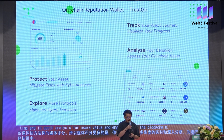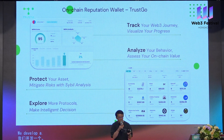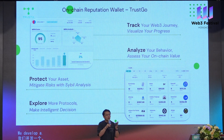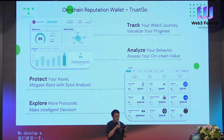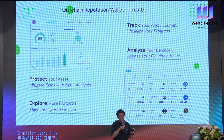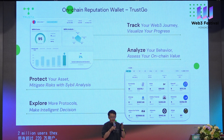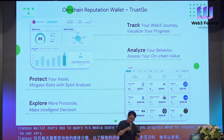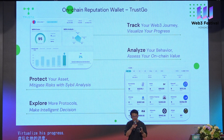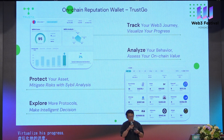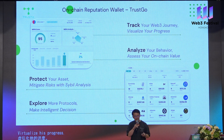We developed a reputation wallet called TrustGo, which has more than 2.2 million users. They use the TrustGo wallet every day to query their media score, to know their progress when they interact with ZkSync, and can very clearly visualize their progress. This wallet has been used widely by a lot of users across different areas to explore more protocols and get more rewards.